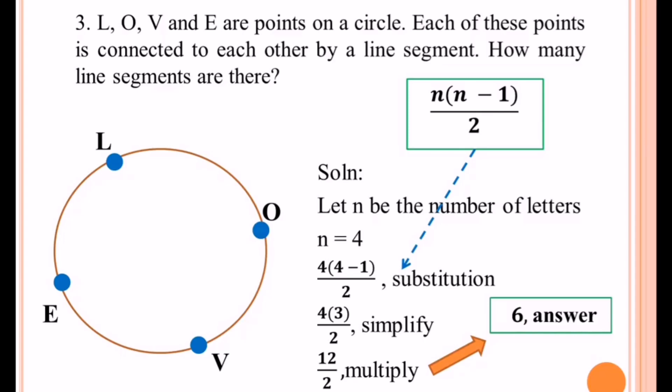So meaning to say, if we have L, O, V, E as points on a circle, then we can create six line segments. Now let us do the actual one.